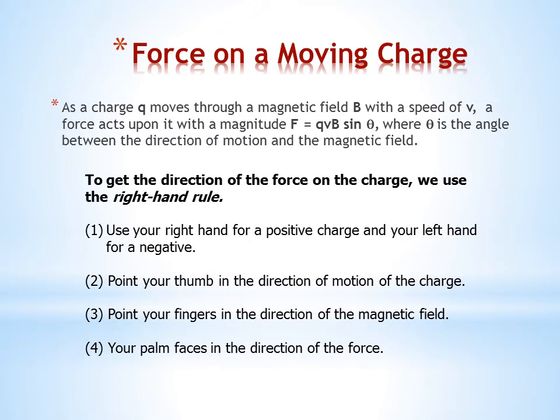Force on a moving charge. As a charge Q moves through a magnetic field B with a speed V, the force acts upon it with a magnitude F equal to QVB sine theta, where theta is the angle between the direction of motion and the magnetic field.